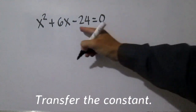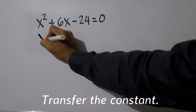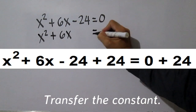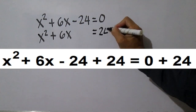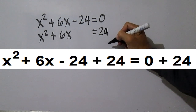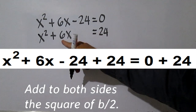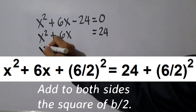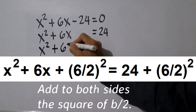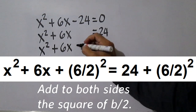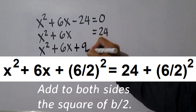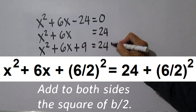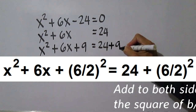To find the values of x, first transfer the constant to the right side of the equation. This is done by adding 24 to both sides. Next, add to both sides the square of one half of b. Since b is 6, one half of b is 3, and 3 times 3 is 9. So add 9 to both sides.